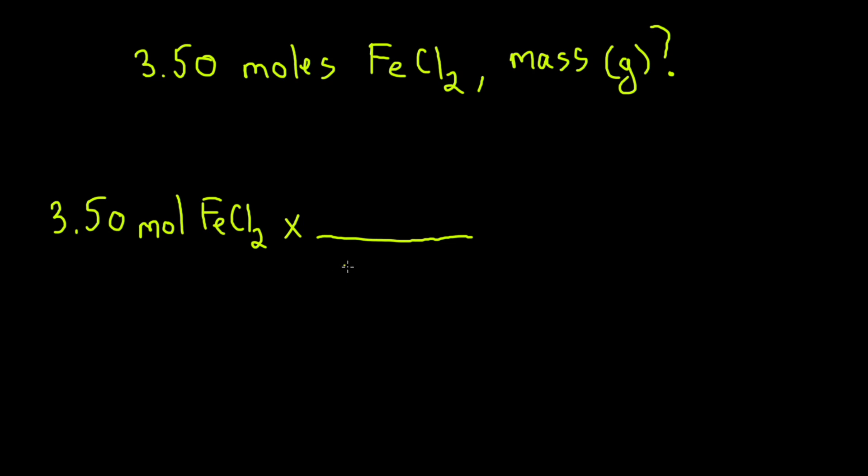Next, let's do the opposite. What if we're given 3.50 moles of FeCl2, iron chloride, and we want to find the mass in grams? We're going to start with what's given, 3.50 moles of FeCl2, and multiply the ratio, making sure you align the units. Moles cancel with moles and we're left with grams. When you do the calculation, you should get 443.63 grams of iron chloride.